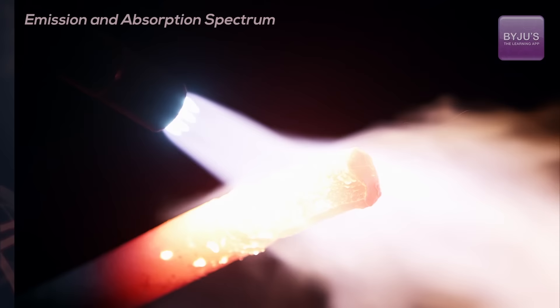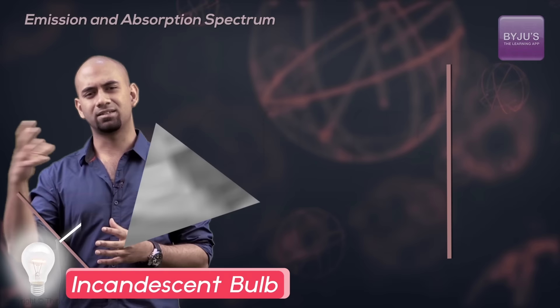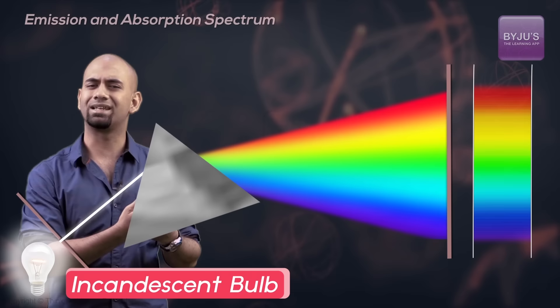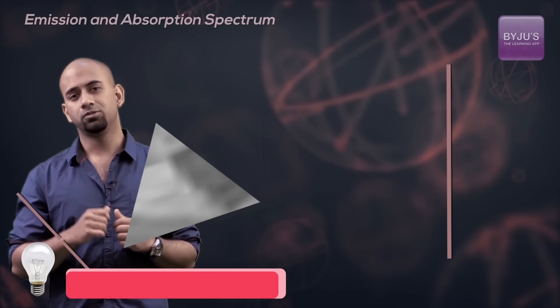Now if I take this hot metal, let me take an incandescent light bulb which is basically nothing but a heated tungsten filament, right? And that's giving out some radiation in the form of light. If I take this light, pass it through some prism and keep a screen behind, what will I get? I'll get a continuous set of colors, or a continuous spectrum, something like this.